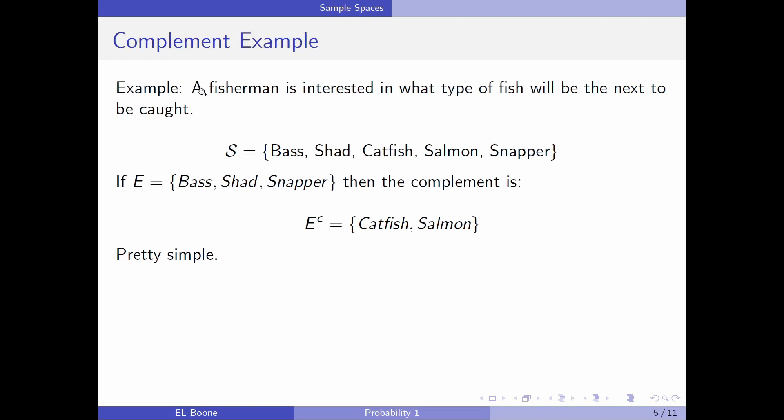Here, a complement example. A fisherman is interested in type of fish. Here's the same sample space we had last time. So let's suppose his event is he could catch a bass, a shad, or a snapper. Then the complement of that is everything that's in S that's not in here. And we notice that catfish is not in here, so it would go there. And we notice that salmon is not in here, so it would go in here. So it's pretty simple. You just have to go through and just pay attention, and it works pretty easy.